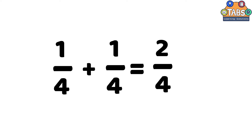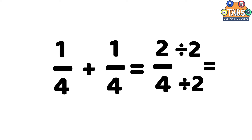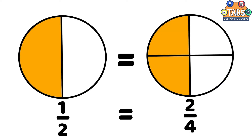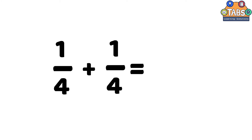2 fourths can be divided both by 2, which equals 1 half. In picture form, it looks like this. So, 1 fourth plus 1 fourth is equal to 1 half.